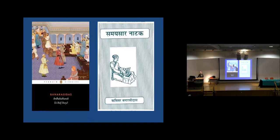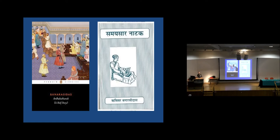Jains also produced Braj Bhasha poetry. The most famous example is Banarsidas, the 17th-century merchant of Ardha Kathanaka fame — one of the only full autobiographies in pre-modern South Asia, a fantastically interesting text. And, of course, also his commentary on Kundakunda, the collective author — both influential and important texts. Other Jain poets in Braj Bhasha existed and have been worked on.